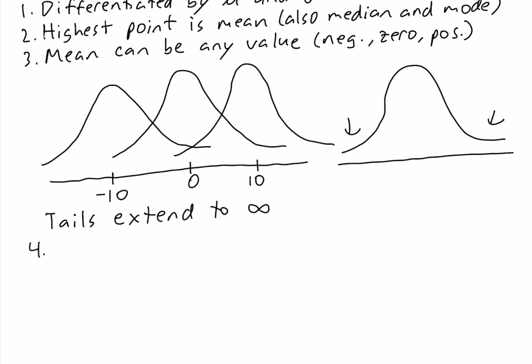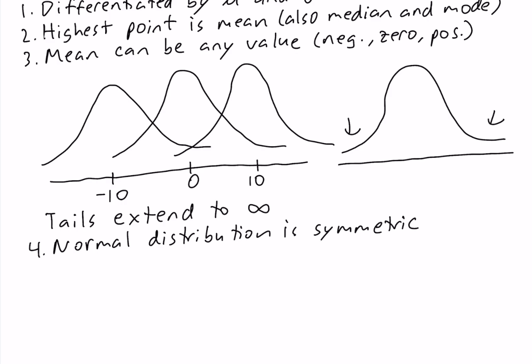The fourth characteristic of the normal distribution is that it is symmetric. In a normal distribution, we have the mean in the middle, and what's to the left of the mean is a mirror image of what's to the right of the mean.